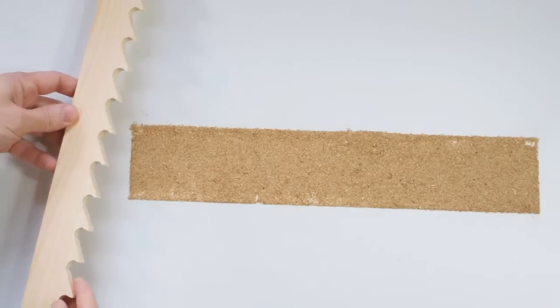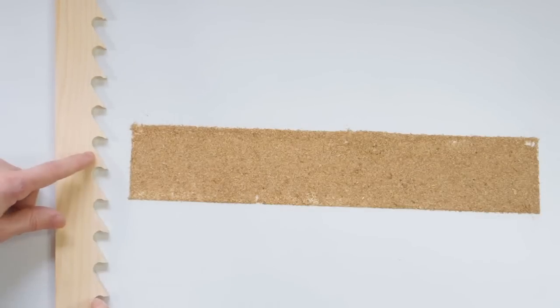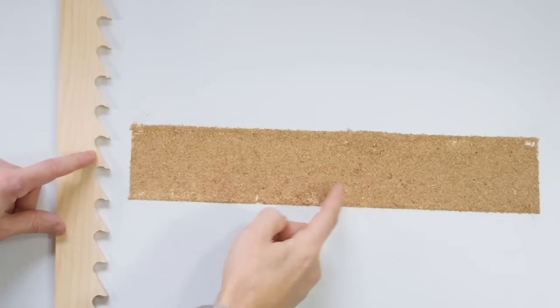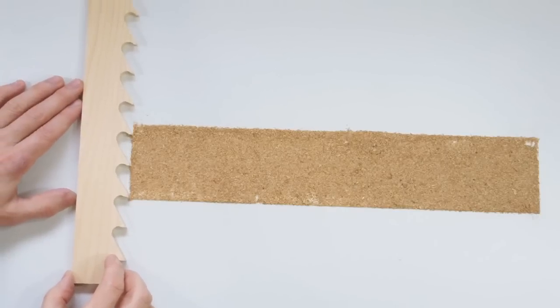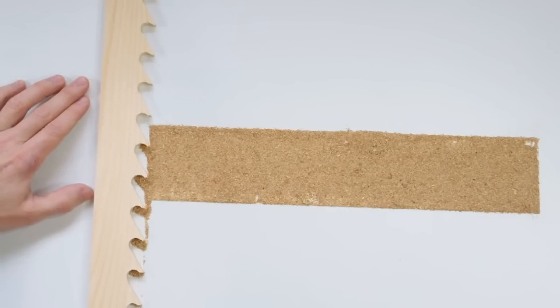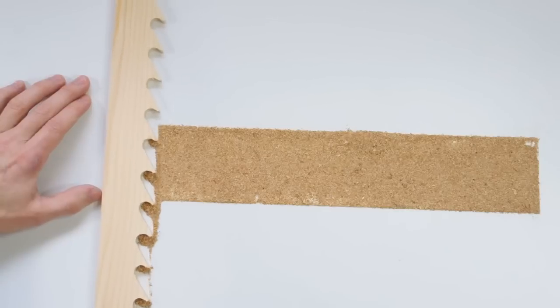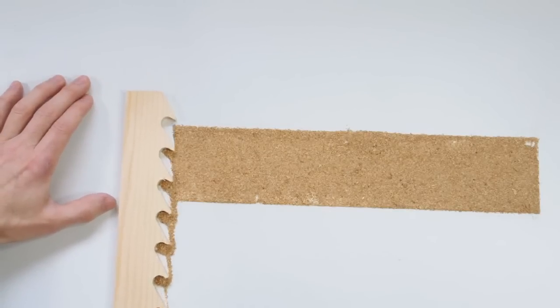I made this wooden model of a bandsaw blade to show how it works. And because the wooden blade won't actually cut anything, I'm just using sawdust to pretend to be my board. As the bandsaw blade moves past the board, each tooth cuts away a little bit of the board and carries away the sawdust. And as long as the board isn't too thick, that works just fine.